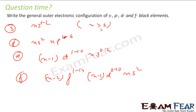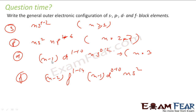For s-block, n can be 1 or greater than 1. For p-block, n has to be greater than or equal to 2, with a maximum of 7, so n ranges from 2 to 7. For d-block, it starts at n equals 4 because n minus 1 must equal 3. For f-block, n starts at 6 because n minus 2 must equal 4. That is the general form.